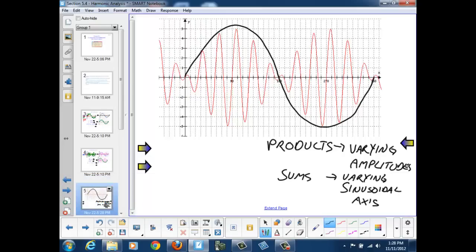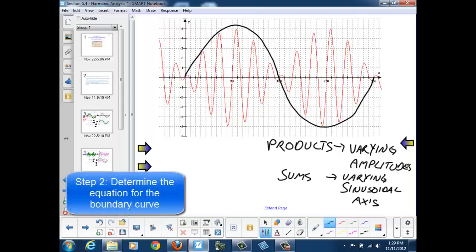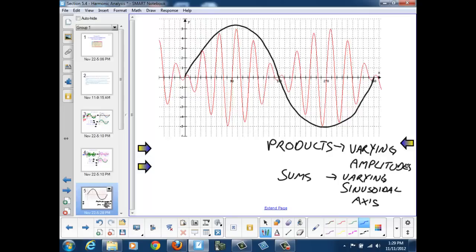And then I try to come up with an equation for that boundary curve because that will be one of my functions. Here I can see that since I started at the origin and returned to the x-axis after 360 degrees my graph is a sine graph.